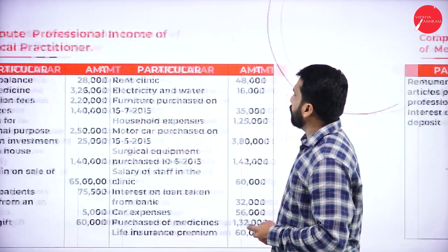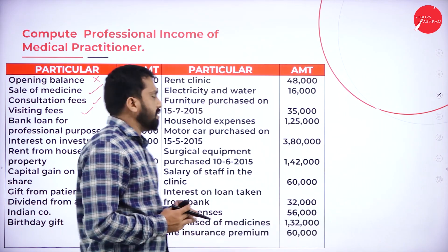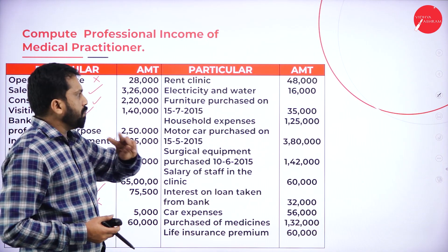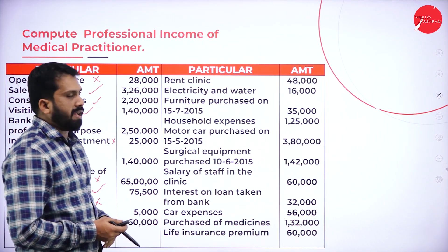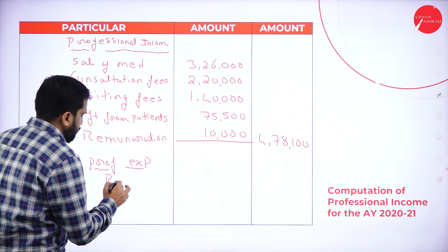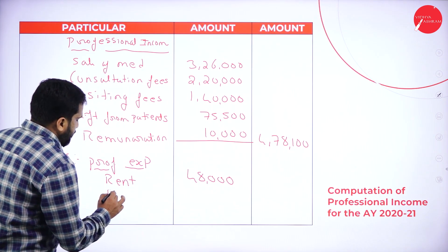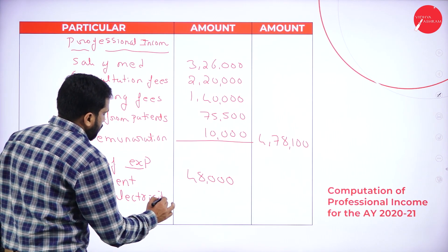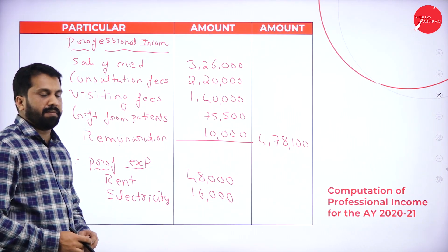The first professional expense is rent of the clinic: 48,000 — no adjustment, so we take it as is. Next, electricity and water: 16,000 — again, no adjustment. Both figures are taken directly.